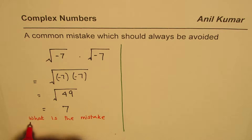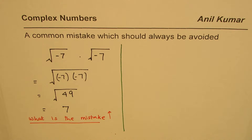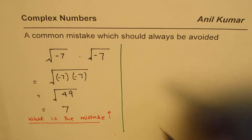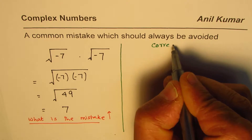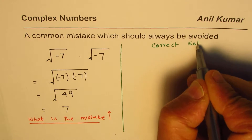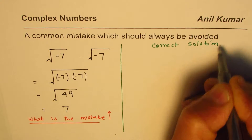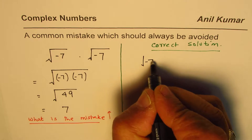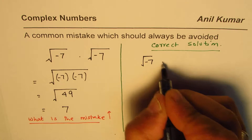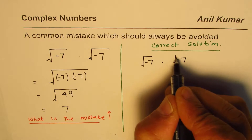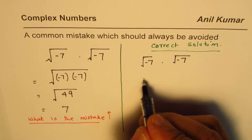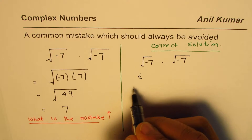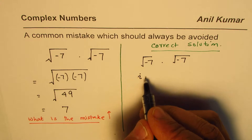You need to point out the mistake in this particular solution — that's the big question. Here is the correct solution. We are given square root of minus 7 times square root of minus 7. In complex numbers, iota (i) is the square root of negative 1.